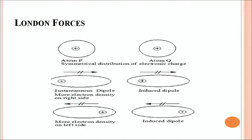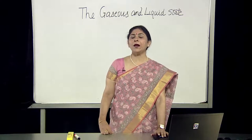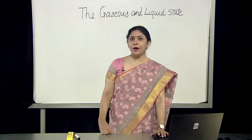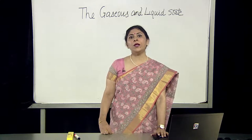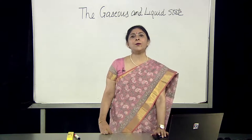Now I'll show you with an example. Let us consider two atoms P and Q. Let the electronic charge distribution in atom P be unsymmetrical, so the charge cloud is denser on one side. This leads to the generation of an instantaneous dipole on atom P for a short period of time. This instantaneous dipole on atom P alters the electron density of atom Q placed close to it, inducing a dipole in atom Q. The temporary dipoles of atoms P and Q attract each other. In the same way, temporary dipoles are induced in molecules too. So we can say this is a temporary attraction.